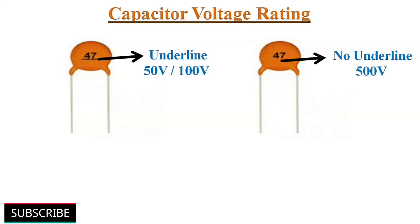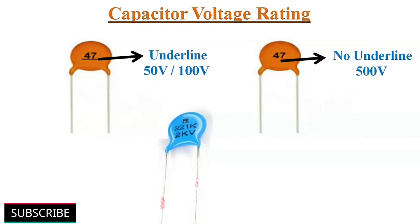The brown colored ceramic capacitors usually have an underline below the marking, which means the voltage rating is 50 volts or 100 volts. If there is no underline, then the voltage rating is 500 volts. Some capacitors have 2KV and 1KV printed on their surface.